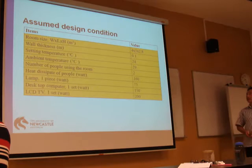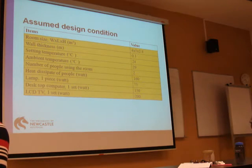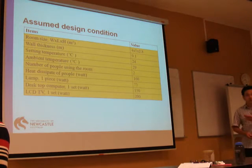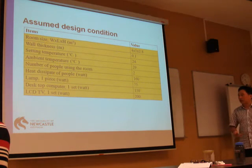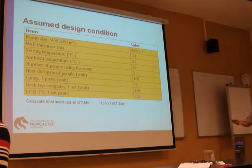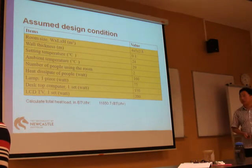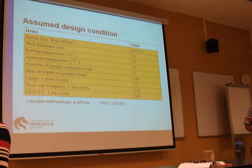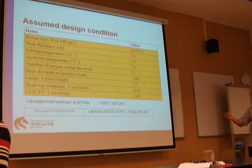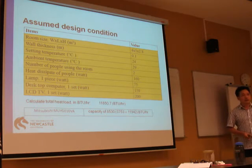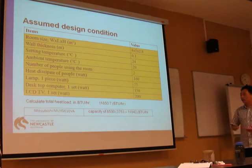These are the design conditions that we assume and need. We need to keep the design conditions consistent throughout the design stage. By doing this, we are able to calculate the heat load required to reduce the room temperature by 5 degrees Celsius, and then select a commercial air conditioner that is able to handle this heat load.